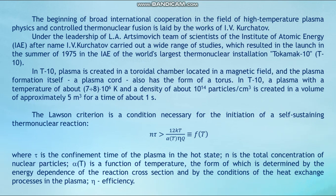In T-10, plasma is created in a toroidal chamber located in the magnetic field, and the plasma formation itself — the plasma core — also has the form of a torus. In T-10, plasma with a temperature of about 7–8×10⁶ K and a density of about 10¹⁴ particles per cm³ is created in a volume of approximately 5 m³ for a time of about one second.